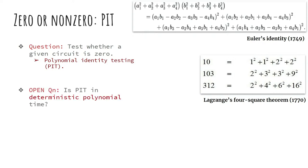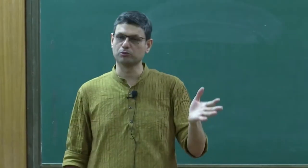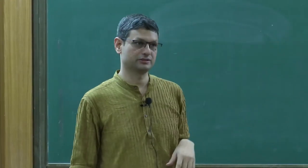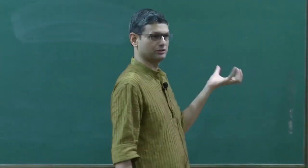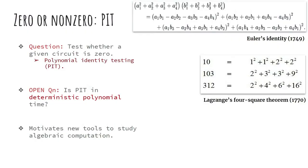The open question is to do this without randomization — to find a deterministic polynomial time algorithm to be 100% sure that a given circuit is zero. That's the open question of derandomizing PIT. To derandomize you have to do far more work than random evaluation — you have to actually discover structural properties of circuits. Deterministic solutions require inventing new structural properties.